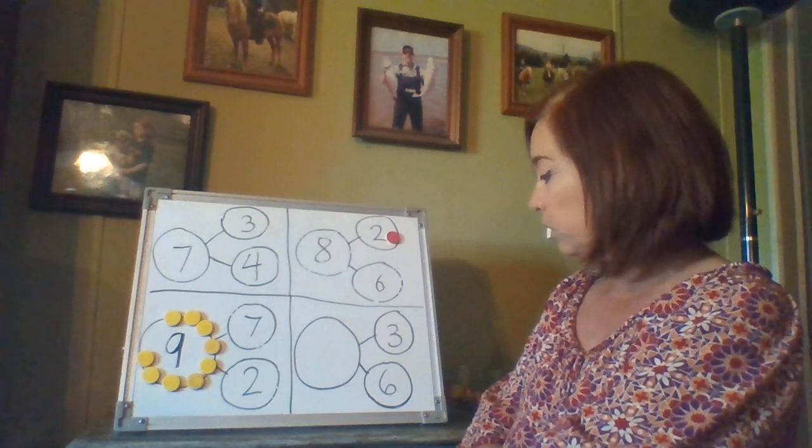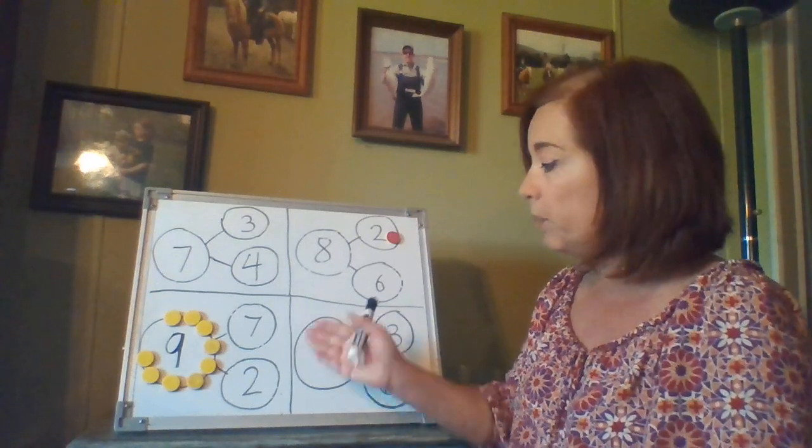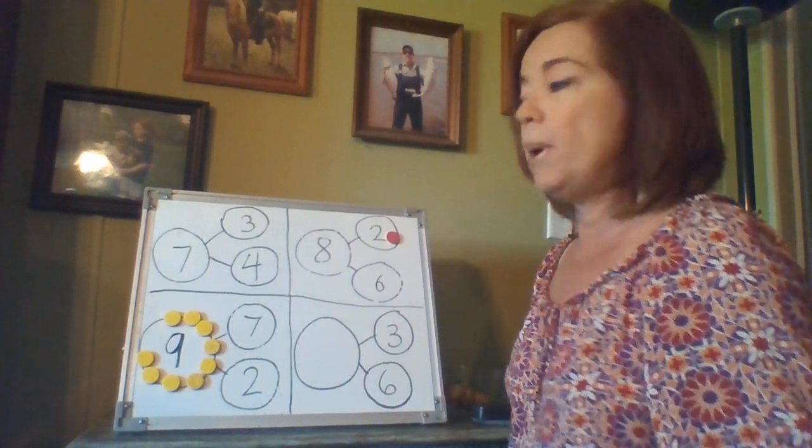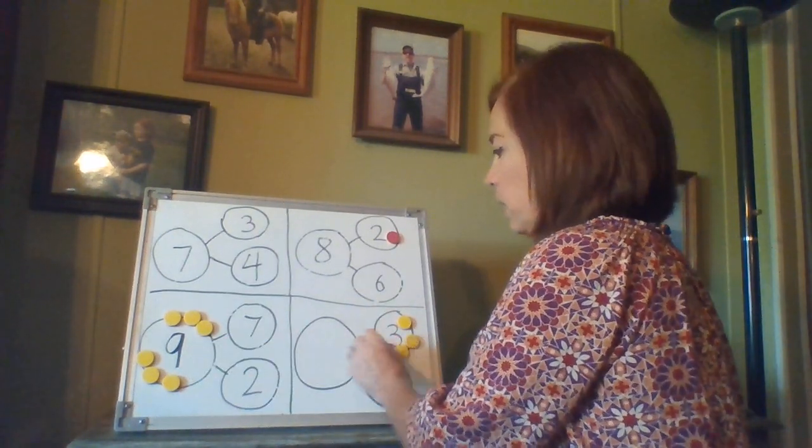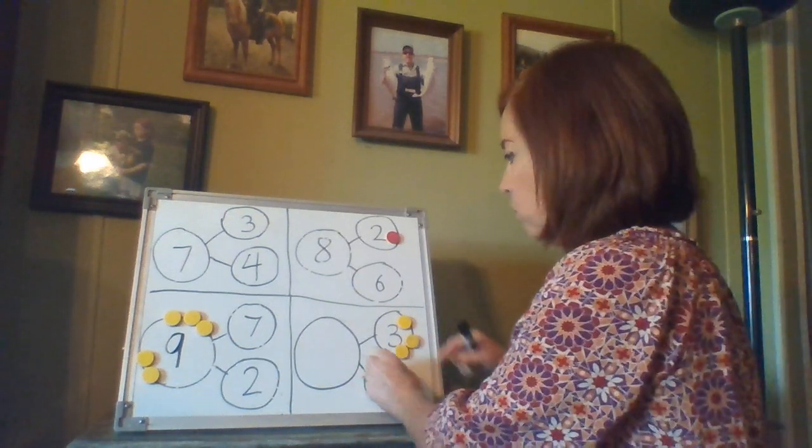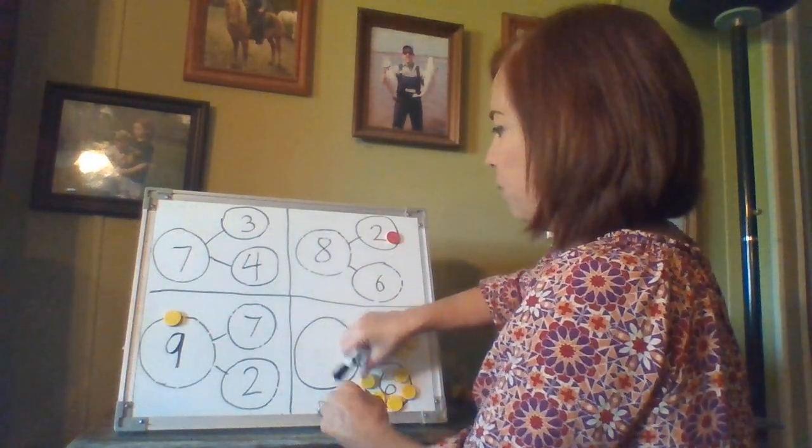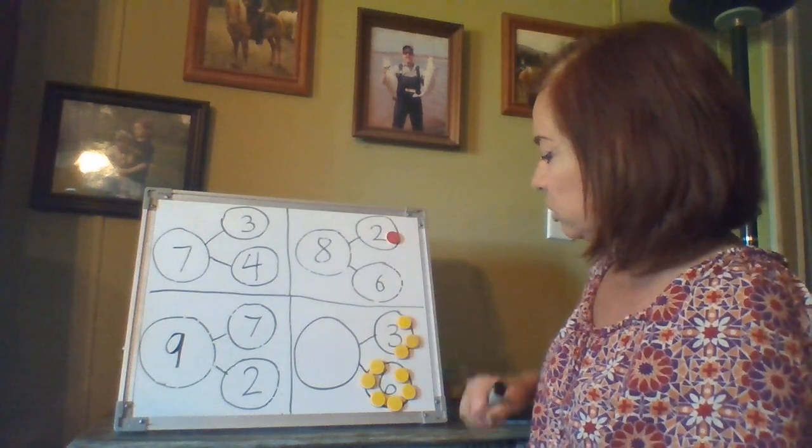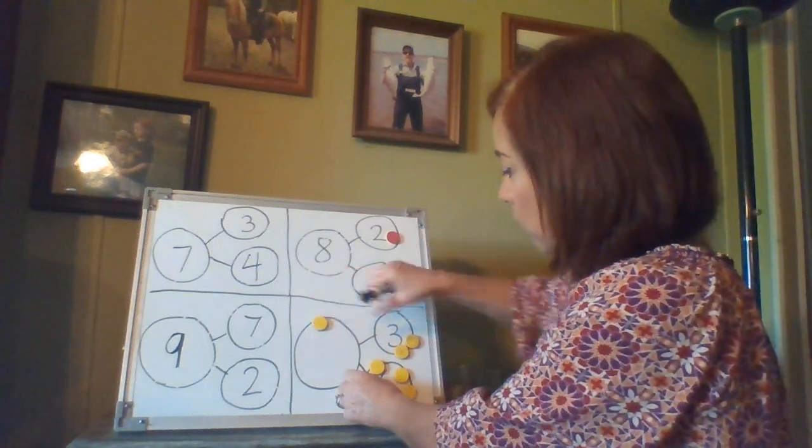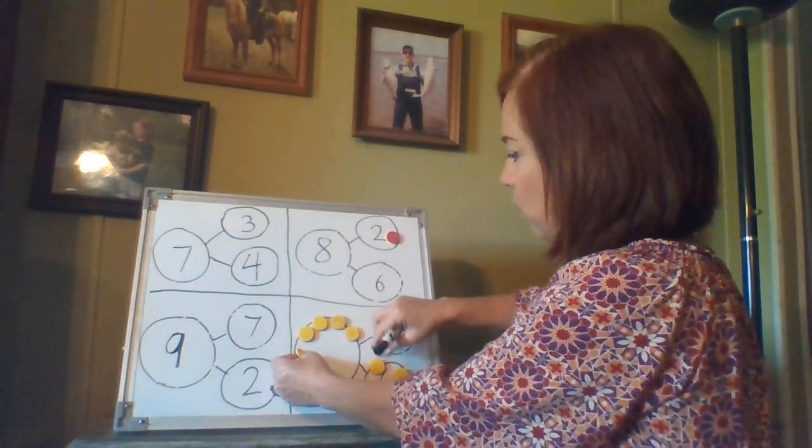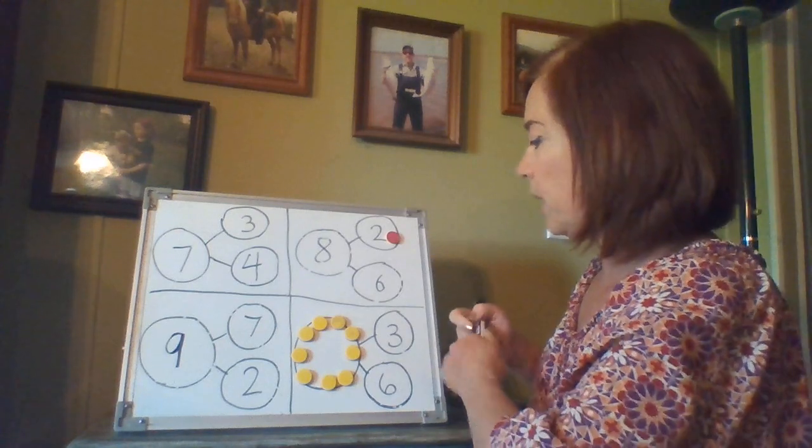Okay guys, we have one more to do. Let's look at it. We have a three and a six. Three is a part and six is a part. We're missing the whole. We're missing the sum. So we have three here. One, two, three. And we have six here. One, two, three, four, five, six. So now we're going to put them all together to find out what that equals. Three plus six equals one, two, three, four, five, six, seven, eight, nine. Three and six make nine.